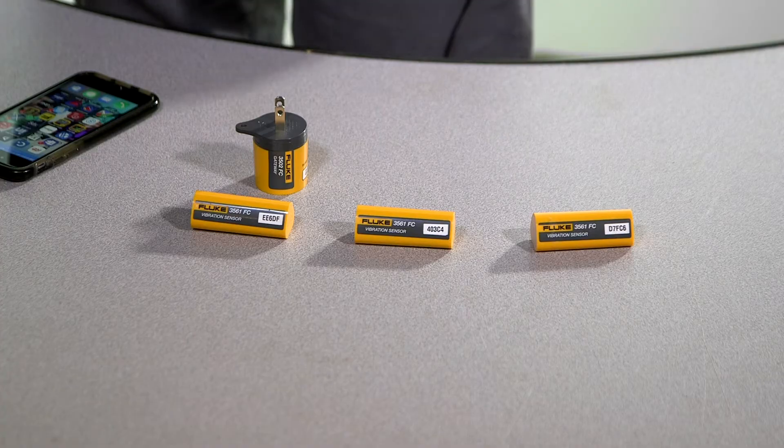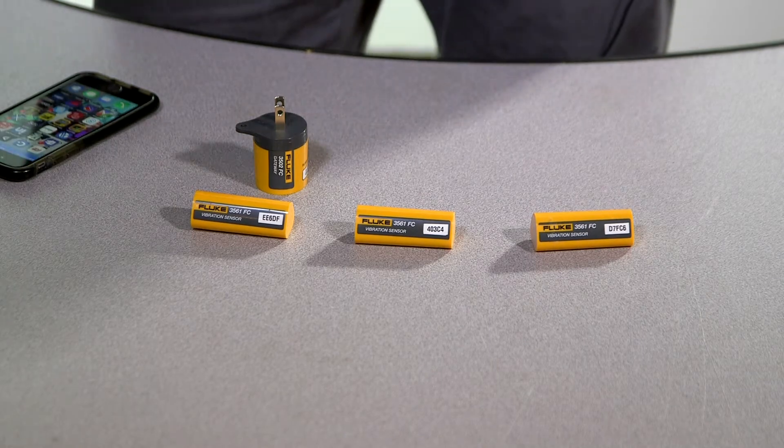The operating range of these sensors is between 100 and 200 feet line of sight. If there's any kind of obstruction in the way, you'll probably reduce that range to about 100 feet.